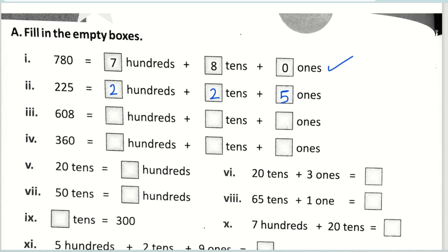The next one is six hundred eight. It would be easier if you write your place value first. Now tell me — how many hundreds? Six hundred. How many tens? Zero tens. And how many ones? Eight ones.